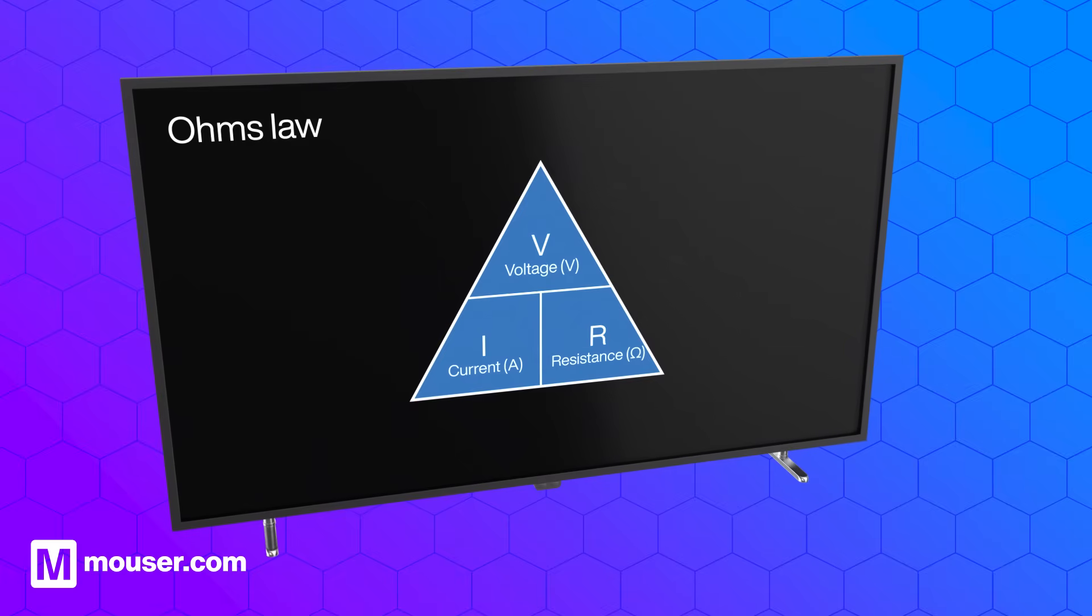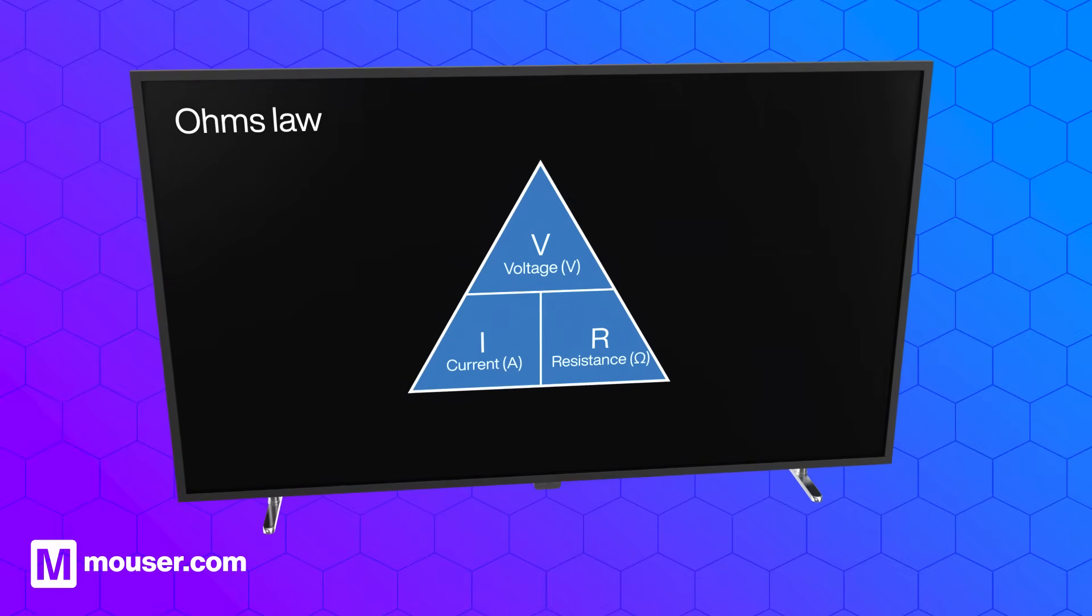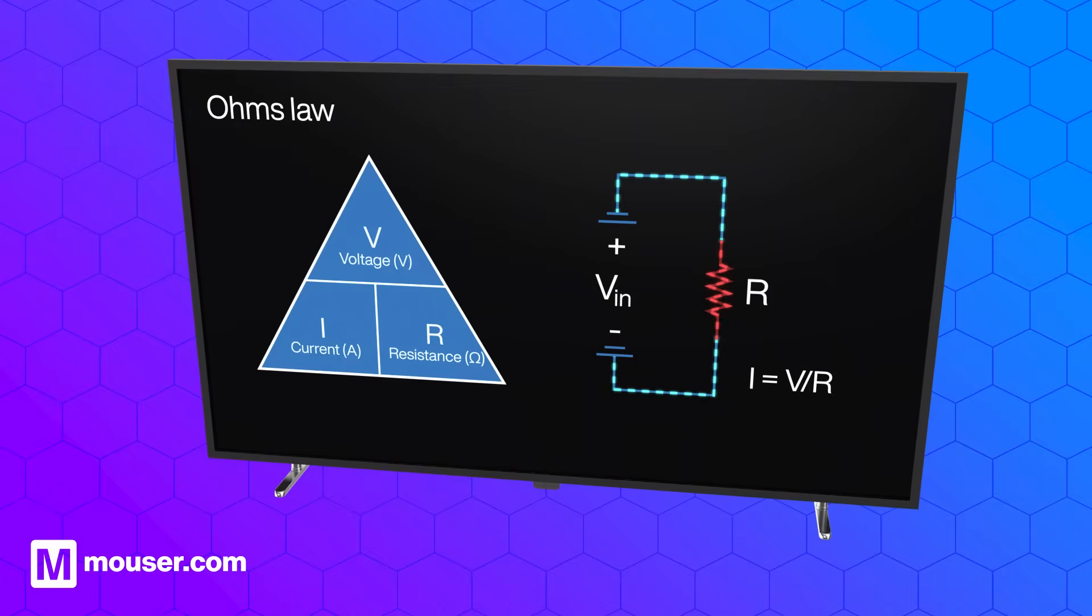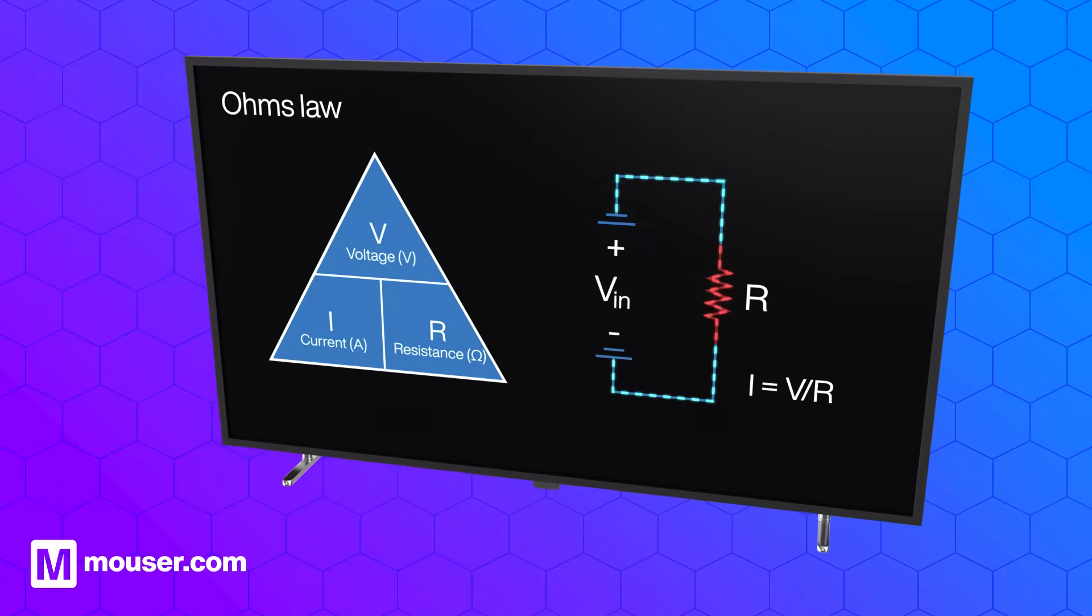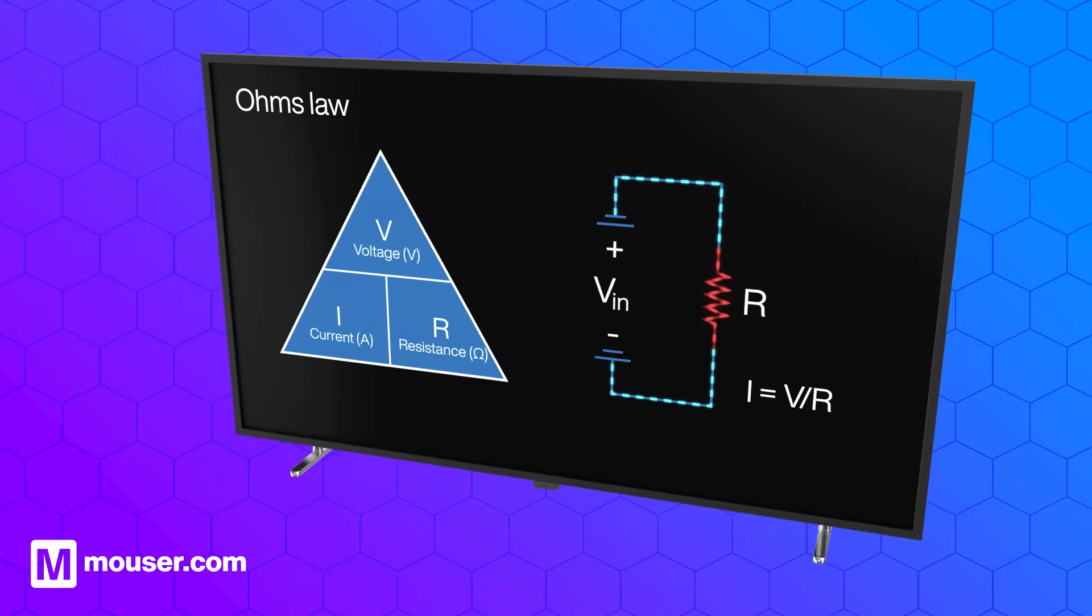To understand how the voltage divider works, we first need to remind ourselves of Ohm's law. Voltage equals current times resistance. We can then simplify the circuit and transpose the equation to find the total current, I, thus current equals voltage divided by resistance.